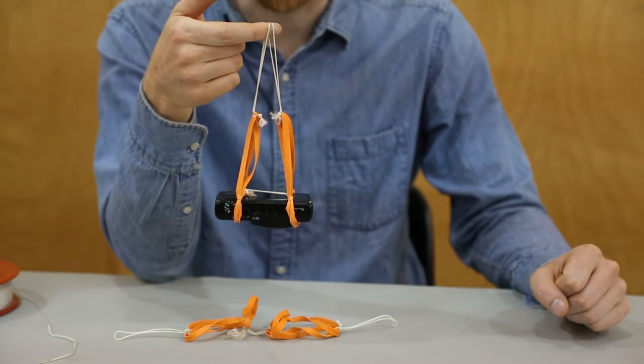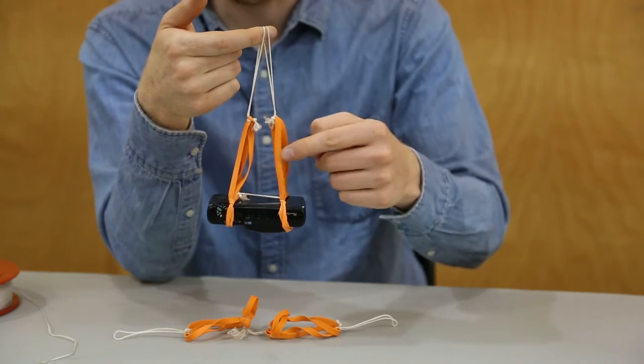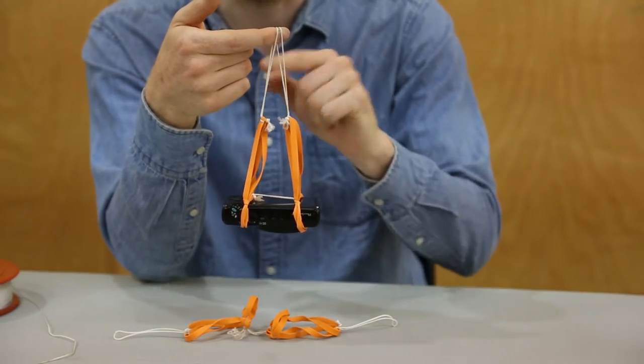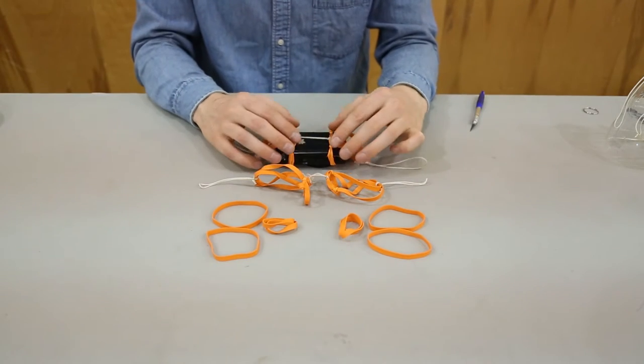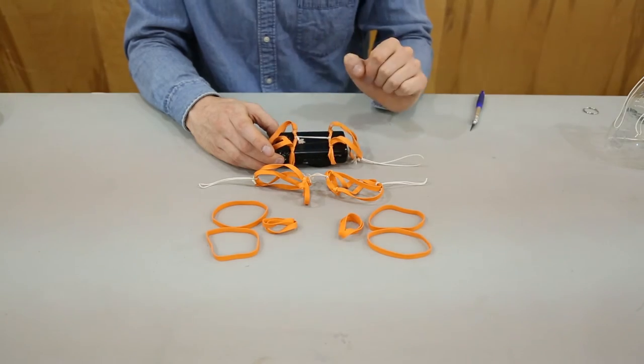Next, we're going to make the camera harness, which consists of six rubber bands. We're going to make three string loops. We will start by tying a loop of string between the doubled up rubber bands.